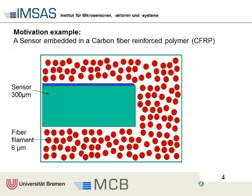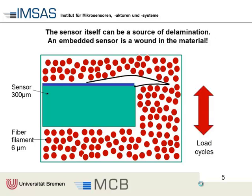A nice example of a material is carbon fiber reinforced polymer - the material modern airplanes and wind energy plant wings are made from. Several sensor functions should be integrated in this material. The fiber filaments are some microns thick, yet sensors available may be 100 microns thick. If laminated in, and the airplane wing flexes down ten million times, sooner or later the sensor becomes a problem because it's not adapted, leading to large strain and delamination.